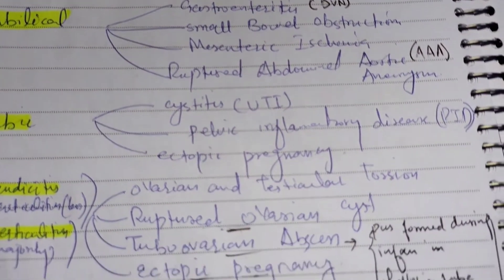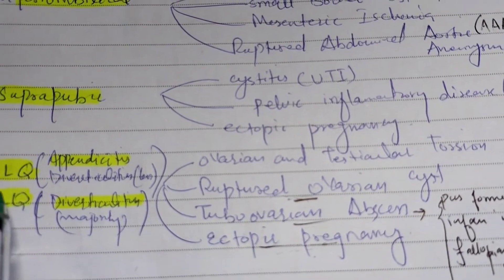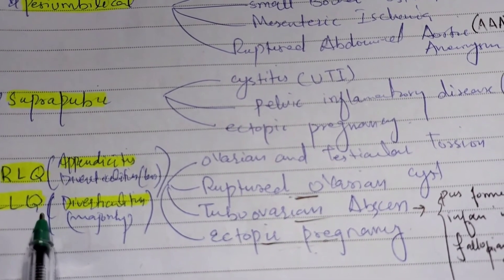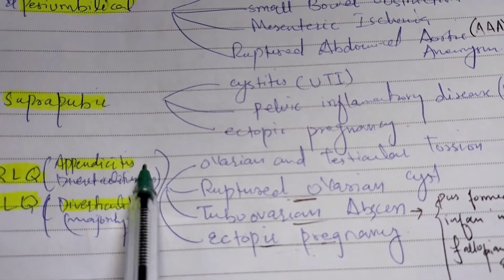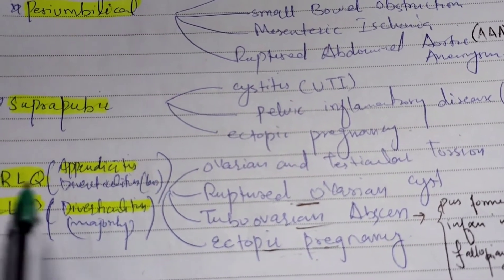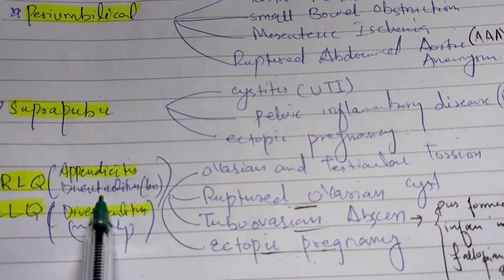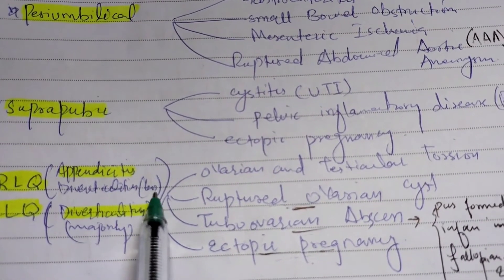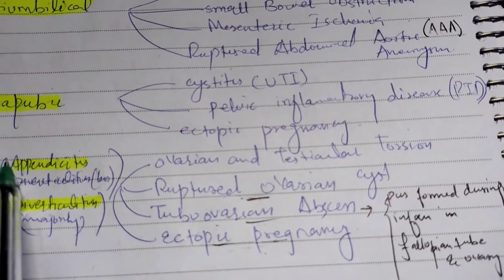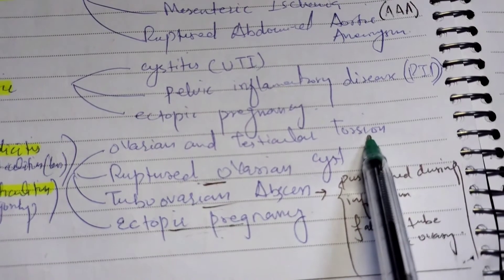In the right lower quadrant we have appendicitis, and in the left lower quadrant we have diverticulitis — though diverticulitis can also occur in the right lower quadrant, less commonly. Common differentials for both right and left lower quadrants include ovarian and testicular torsion.